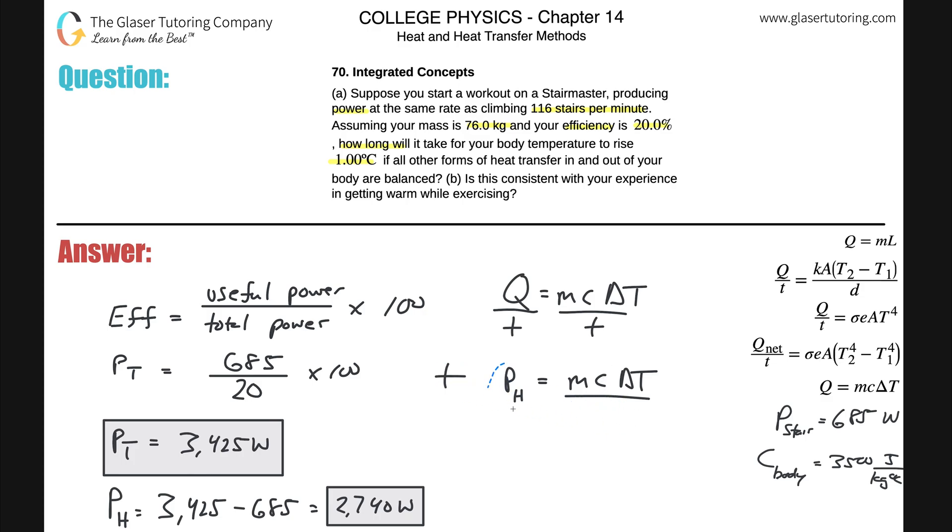The time it takes, by the way, to raise the temperature one degree Celsius in this problem. So just simply cross multiply these two, so I can find the time and then just substitute. Now the mass of the body was 76 kilograms, the specific heat of the body you need to know, that's roughly 3500. The change in temperature then, it says it's going to increase by one degree Celsius, so that's just a one. Divide it then by the power, 2740.